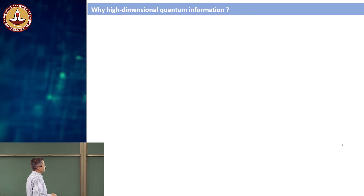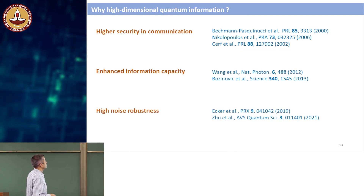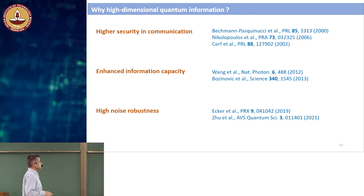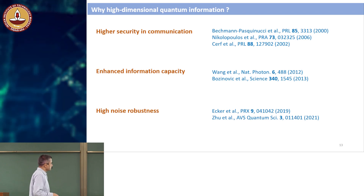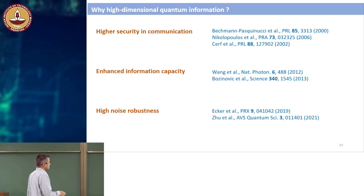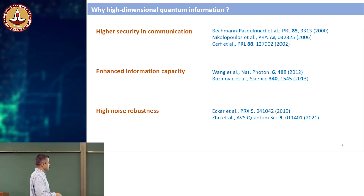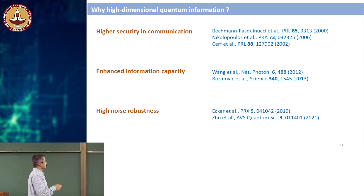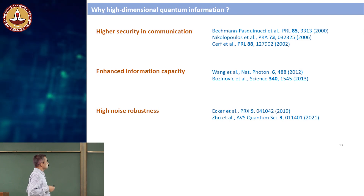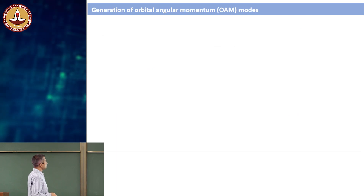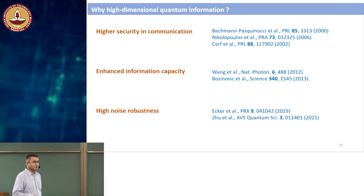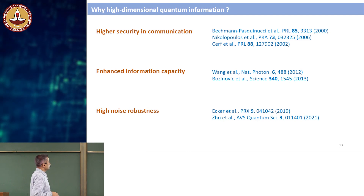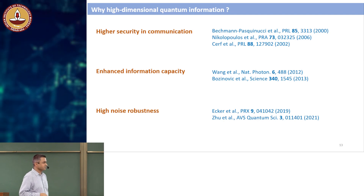Why is everybody excited about using high-dimensional states for quantum information? It gives higher security in communication, enhanced information capacity, and high noise robustness — you can have more noise in the system and still correct for it, compared to just having a spin or polarization two-dimensional basis. These are the big points that one puts effort into. But the major problem with high-dimensional modes is still generating them in a controlled way and detecting them with sufficient efficiency.